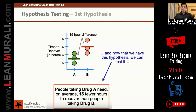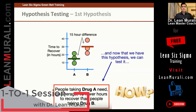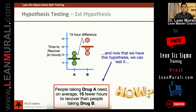Now that we have this hypothesis, we can test it. The hypothesis we made is that people taking drug A recover 15 hours faster than people taking drug B. This is the claim we are making. How are we making this claim? We are taking random samples of people, testing them, finding out the results, plotting them on a graph, finding out the average, and then making this hypothesis.